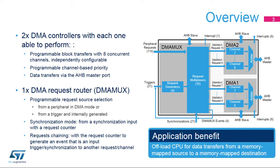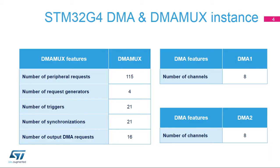Synchronization mode is supported from a synchronization input or hardware event with a DMA-MUX request counter. Requests chaining is also supported with the DMA-MUX request counter to generate an event that is an input trigger or synchronization to another request or channel. There are 115 peripheral requests, four DMA-MUX request generators, 21 triggers and synchronization inputs, and 16 DMA channels or requests.